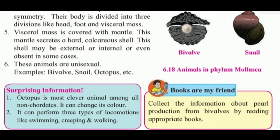The visceral mass is covered with a mantle. This mantle secretes a hard calcareous shell. This shell may be external or internal, or even absent in some cases. These animals are unisexual. Examples include bivalve, snail, and octopus.